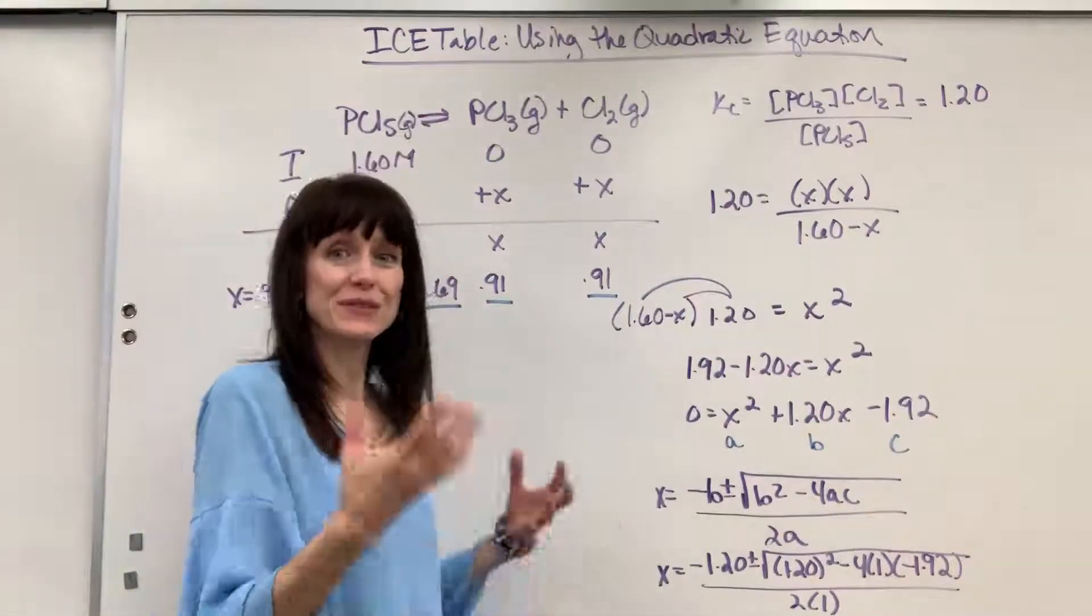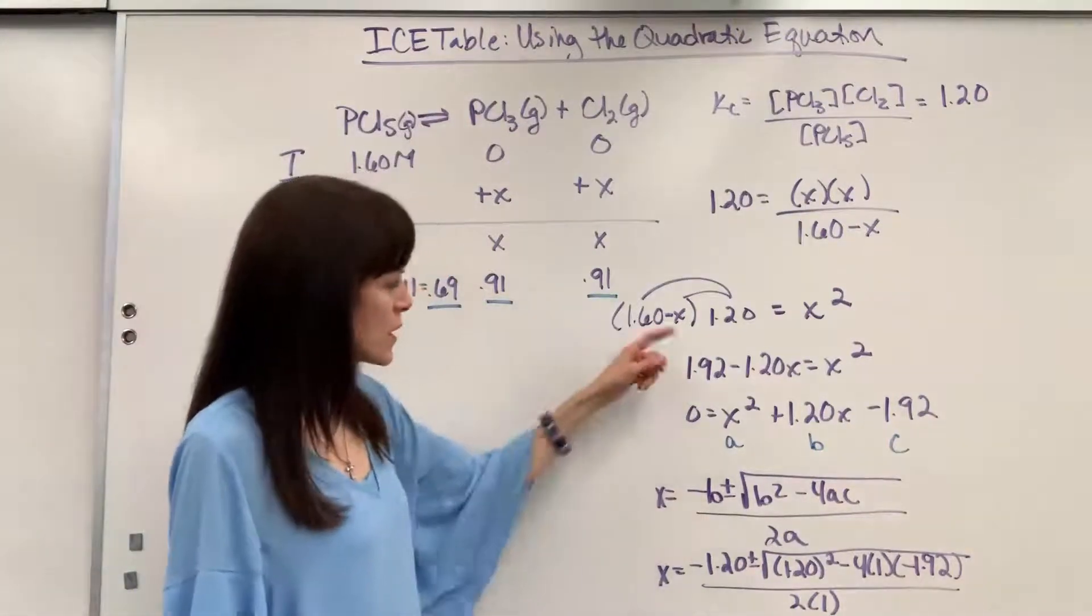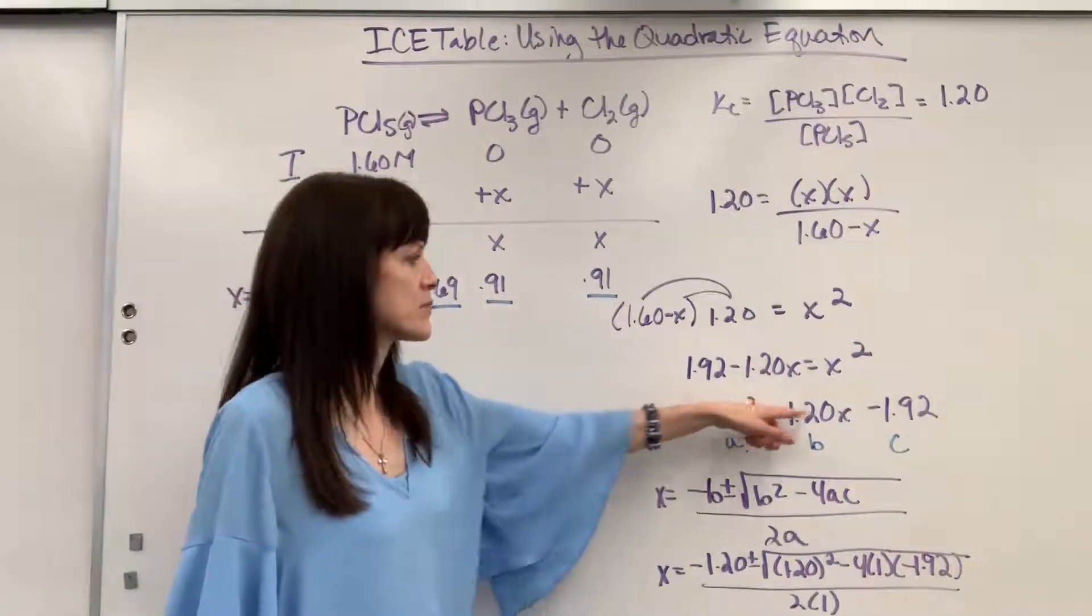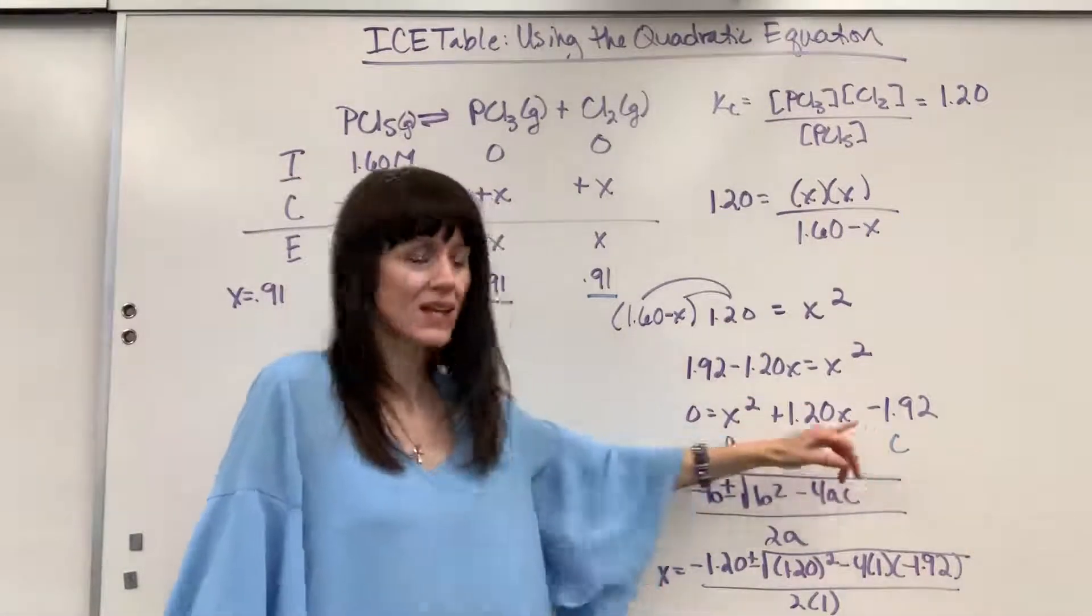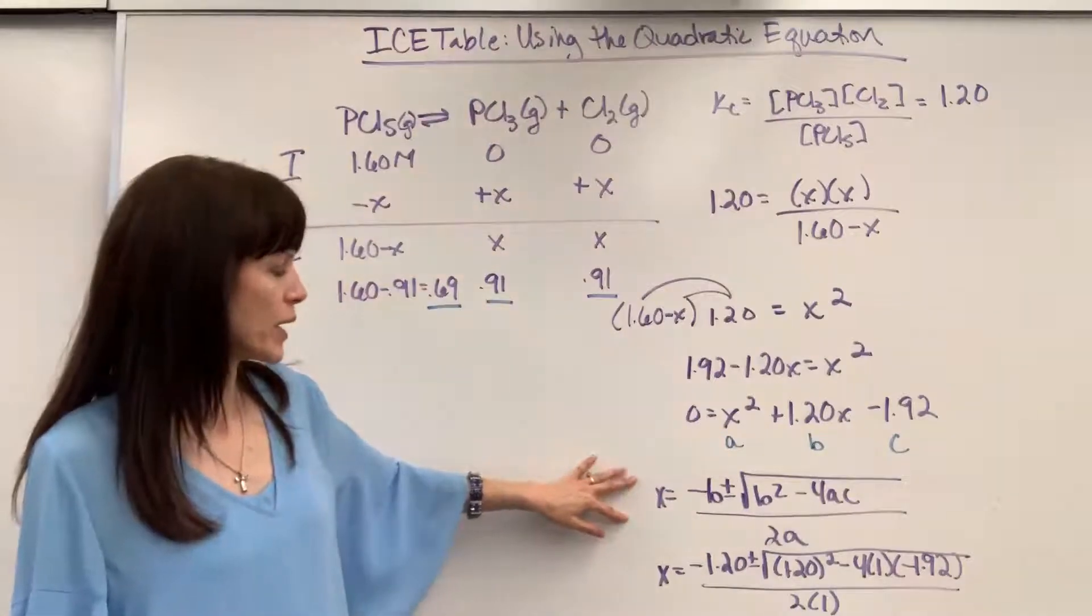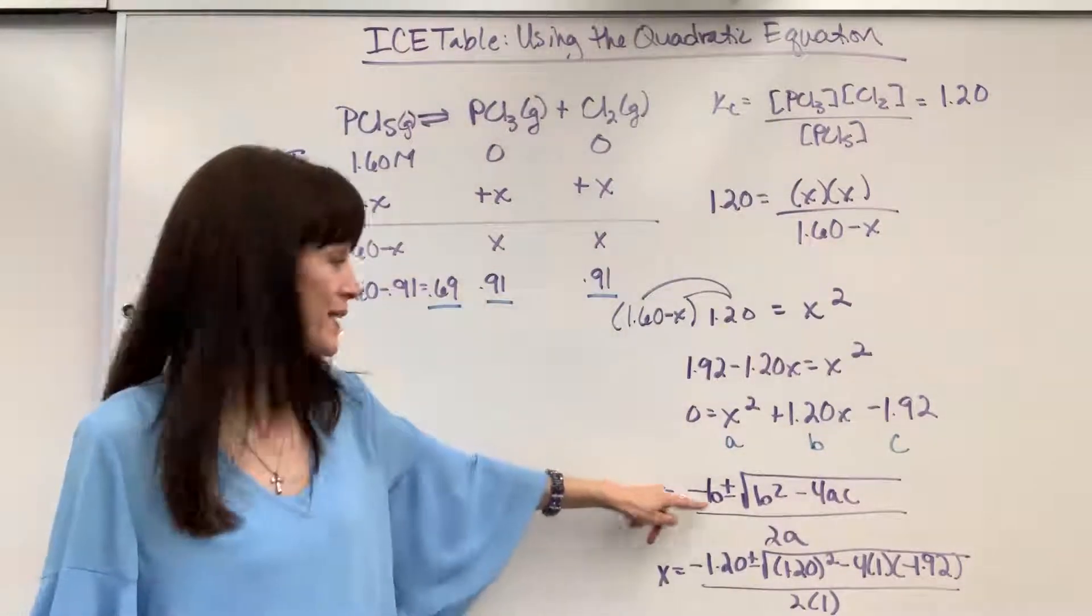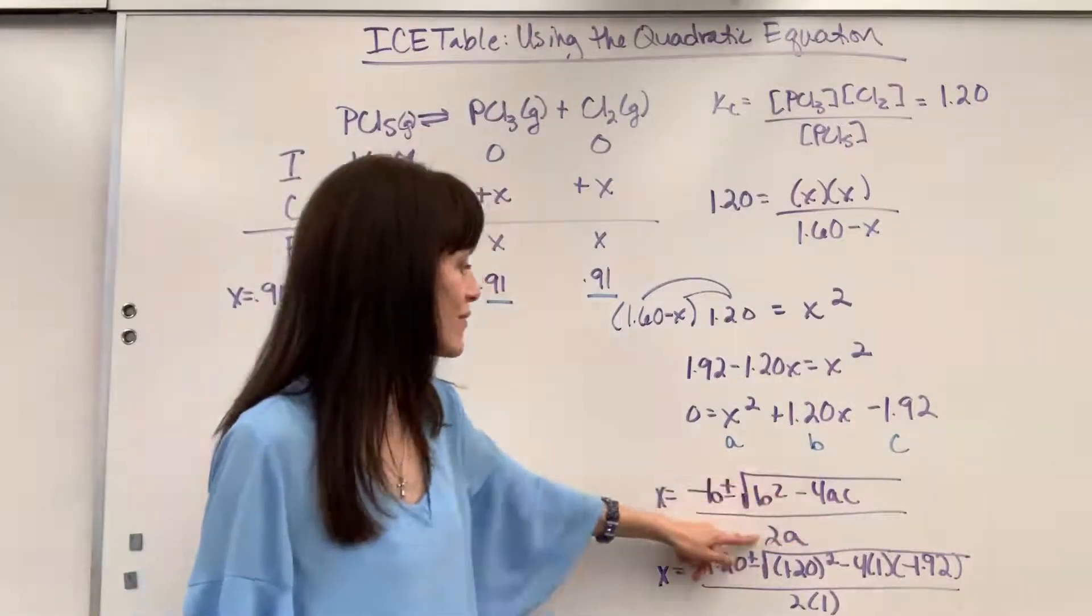Might be the first time that you've used it for something real. So, remember, the numbers in front are going to be our A, B, and C. So here's the quadratic equation. X equals minus B, plus or minus square root of B squared, minus 4AC, divided by 2A.